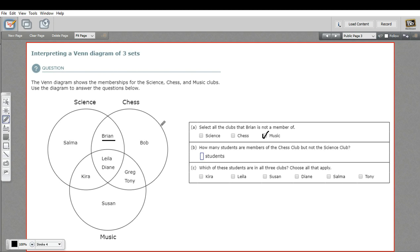What's not science is what's part of chess and music here, but not this part. So these people are in science. So we don't want to include them. But we want these three because they're in chess, but not in science.